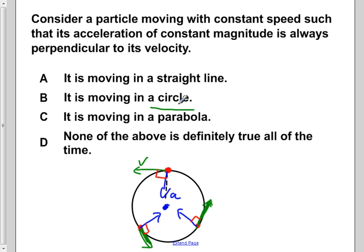So from here, we can see that the only path that we know of is which a particle is moving with constant speed, such that its acceleration of constant magnitude is always perpendicular to its velocity, would be answer choice B is moving in a circle.